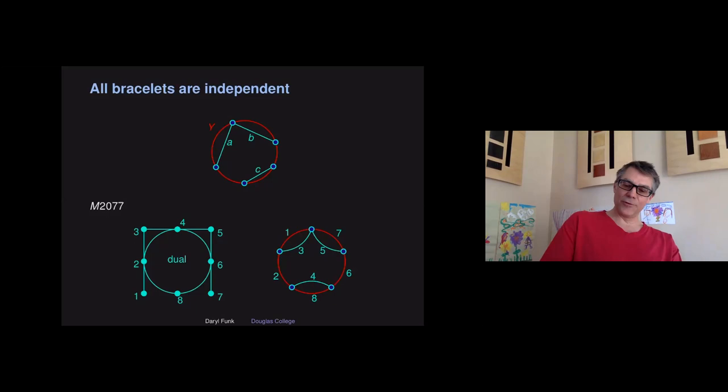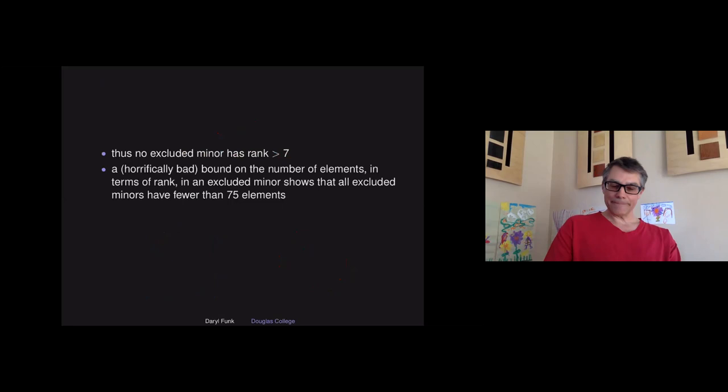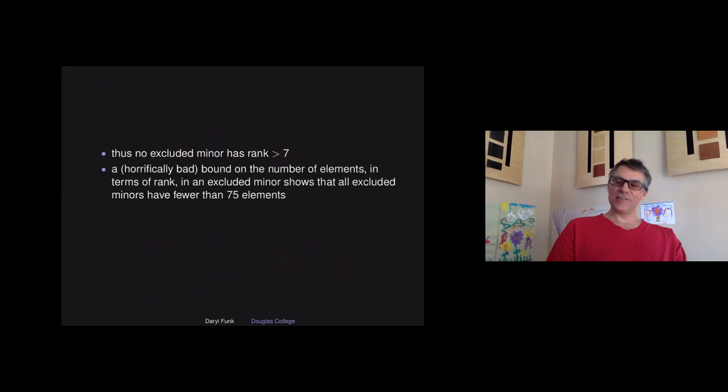That's the proof that you have no excluded minor of rank bigger than seven. Then we proved just the worst bound we could find on the number of elements in an excluded minor — we didn't want to make the paper longer than it already was. No excluded minor has more than 75 elements. Since we know it has rank six or seven or less, and we have a bound on the number of elements in terms of rank, you can plug in seven and get that no other excluded minor has more than 74 elements. So the number is finite.